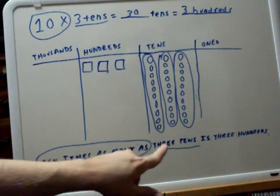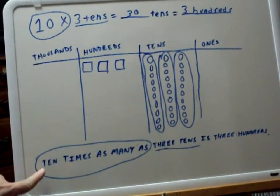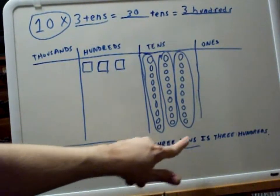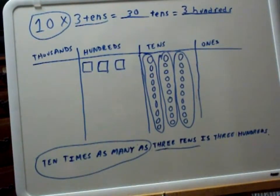And that's the final answer they want you to give. So ten times as many as three tens is three hundreds, and they want you to write this out as an ordinary English sentence. And that's your answer, and they want you to display all of this.